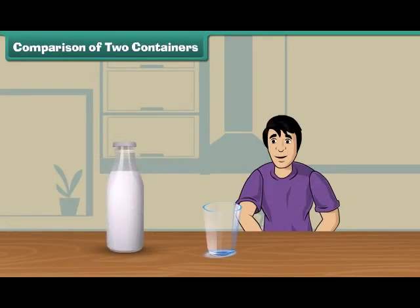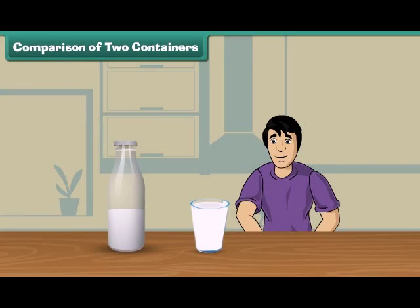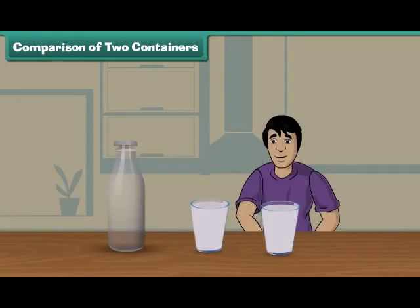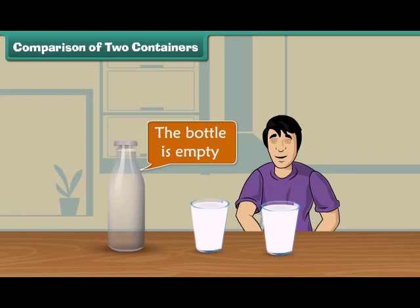Sam brought a bottle of milk. Can you empty this bottle in a glass? He fills the glass with the milk from the bottle. Look, milk is still there in the bottle. He then takes another glass and pours the remaining milk in it. Look, the bottle is empty now. Thus, Sam can empty this bottle of milk into two glasses.